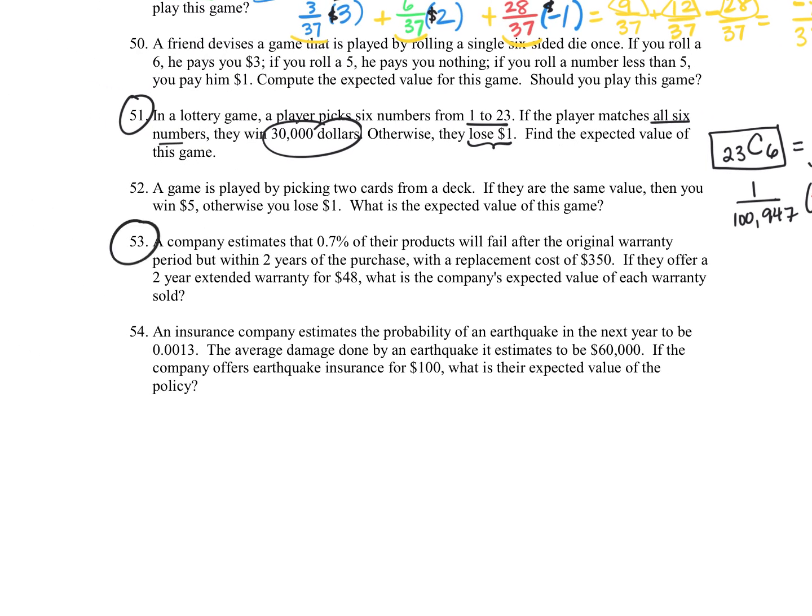For question 53, a company estimates that 0.7% of their products, so less than 1%, will fail after their original warranty but within two years of purchase, with a replacement cost of $350. So they decide to offer a two-year extended warranty for $48. Normally when a company does that, they don't expect their product to fail, and so they're willing to do that replacement. But if people put in the $48, that's kind of what's helping pay for the few that they do need to replace.